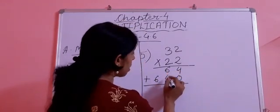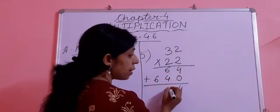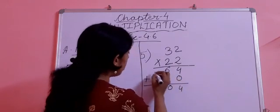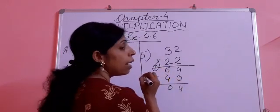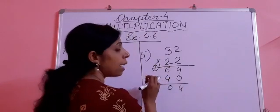Then the ten's place: 6 plus 4 equals 10. So we write 0 in the ten's place and carry over 1 to the hundred's place. Now we add the hundred's place.